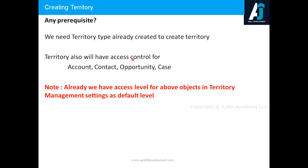Once you create a territory, the territories will also have access control for the objects: Account, Contact, Opportunity, and Case. You have an access control level for each of these. You might have noticed in the first video, while enabling territory management in an org, we had an access level for Account, Contact, Opportunity, and Case — that is the default access level. If you want to override that, you can have a separate access level for individual territories. Each territory in a territory model can have its own access control level for Account, Contact, Opportunity, and Case.